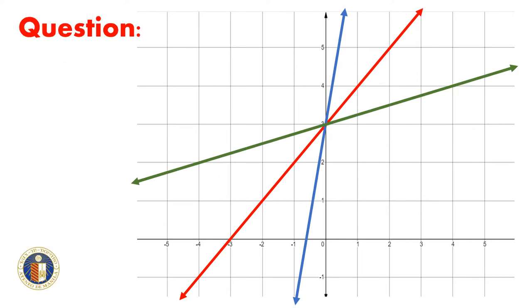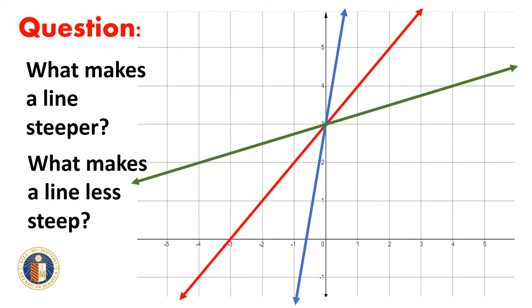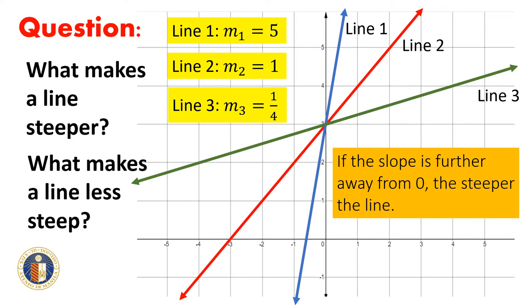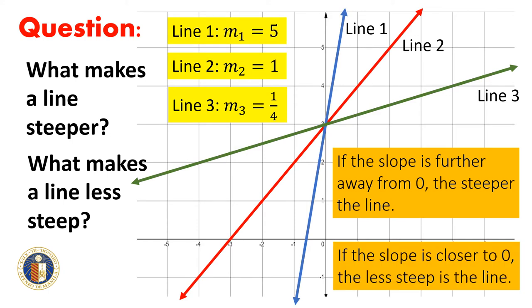What makes a line steeper? What makes a line less steep? Let us compare the slope of three lines. The slope of line 1 is 5, the slope of line 2 is 1, and the slope of line 3 is 1/4. If the slope is further away from 0, the steeper the line. If the slope is closer to 0, the less steep the line.